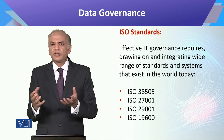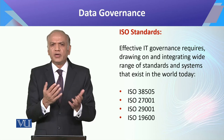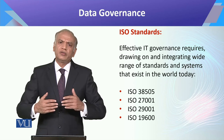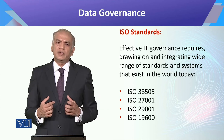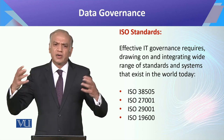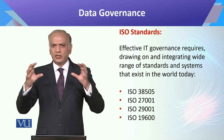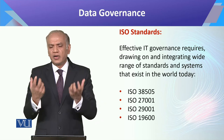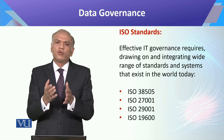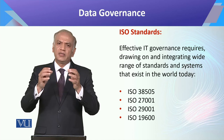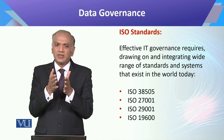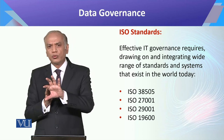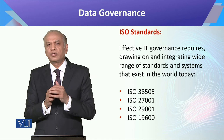ISO 19600 is about privacy and ISO 29000 is about security. These different standards — these 3 to 4 ISO standards — give you a 360-degree approach. If your industry and your company understand and implement these ISO standards, it means you have ensured how secure your data and overall information system is.